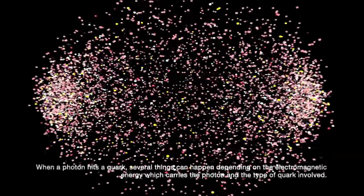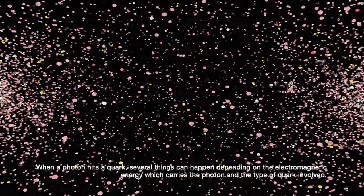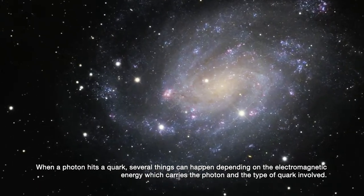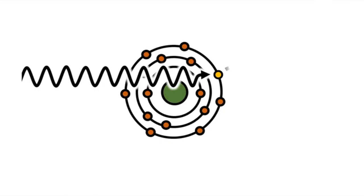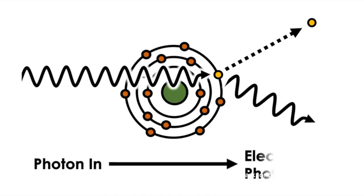When a photon hits a quark, several things can happen depending on the electromagnetic energy which carries the photon and the type of quark involved. Generally speaking, the photon can either scatter off the quark or be absorbed by it.